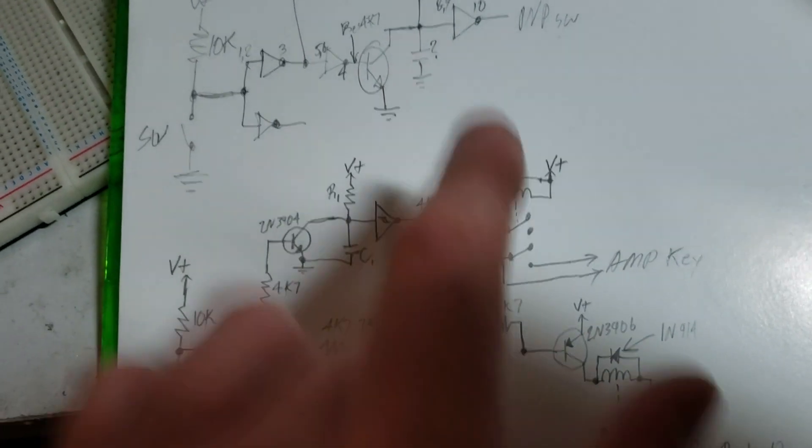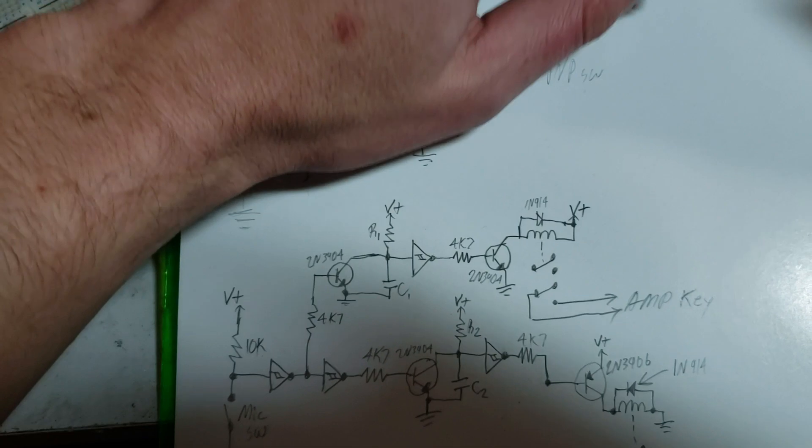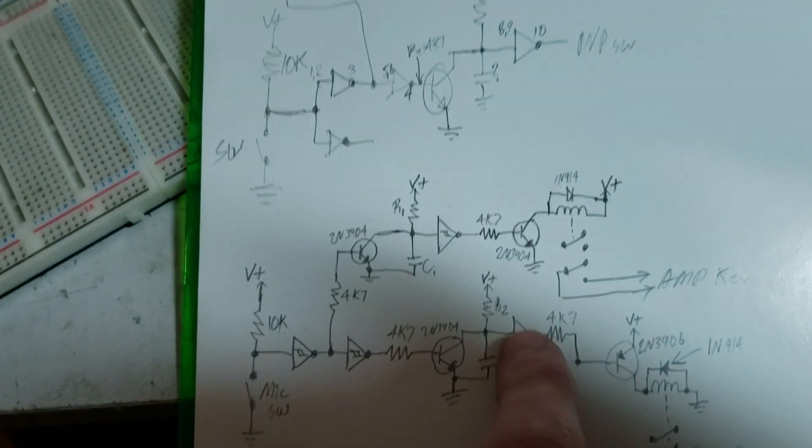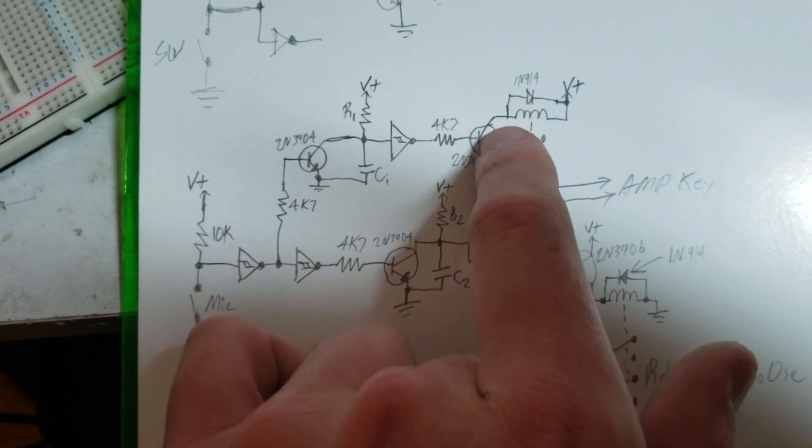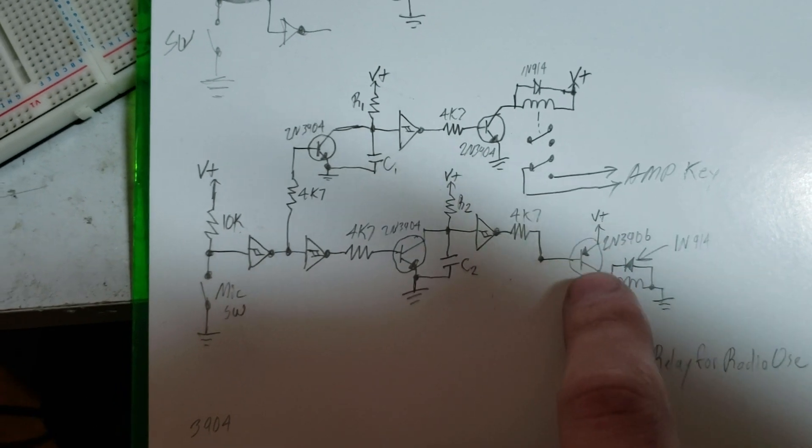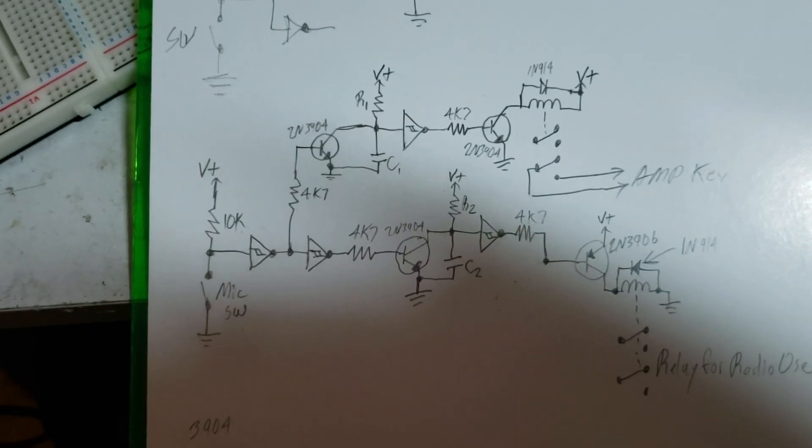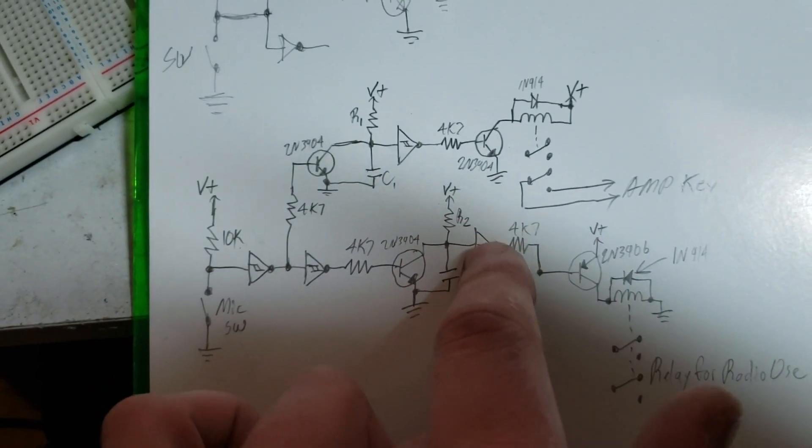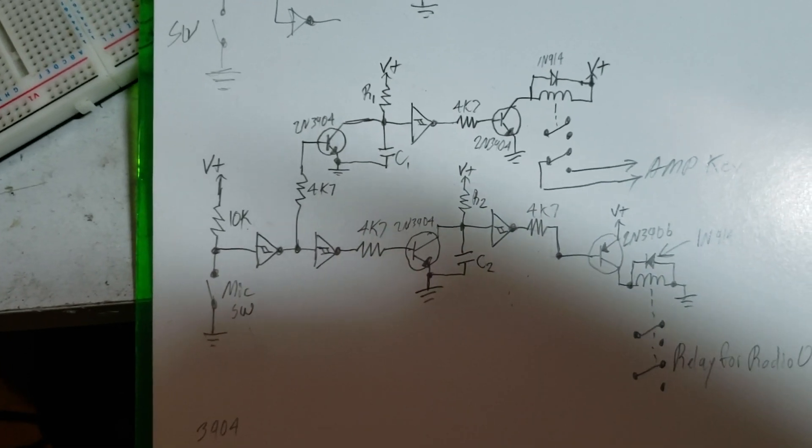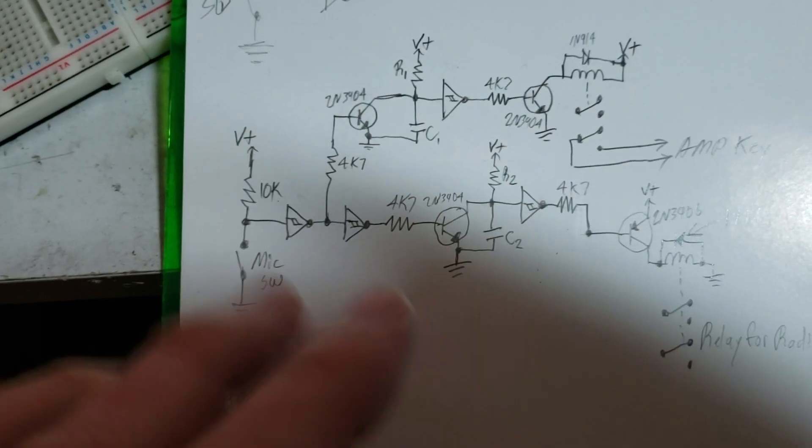So if you notice this is a PNP and this, oops, I'm sorry, wrong schematic. This is old schematic. Don't pay attention up here. This is bad drawing. This is not much better. But we've got NPN up here and PNP down here and that's just because we had to invert it one more time. And on the chip I'm using, I don't have a spare inverter.